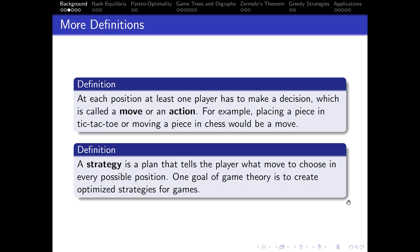A strategy is a plan which tells the player what move to choose in every possible position. One goal of game theory is to create optimized strategies for games. Tic-tac-toe is a solved game, so there's a winning strategy or at least a drawing strategy in each position. Whereas for more complex games like Go, there is no solved strategy, so we're looking for the best strategy to try to win.